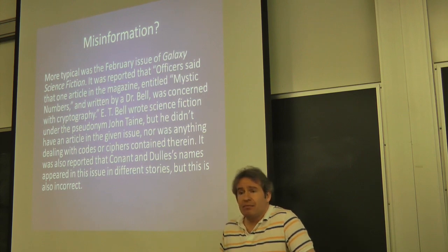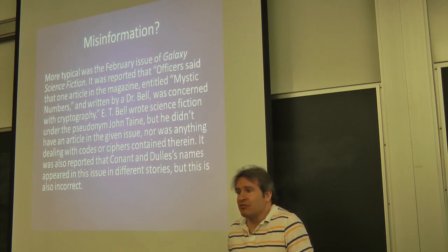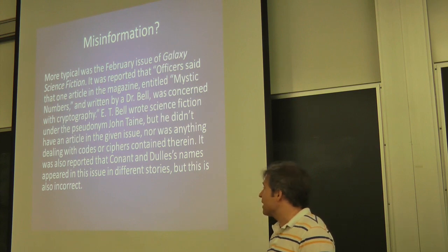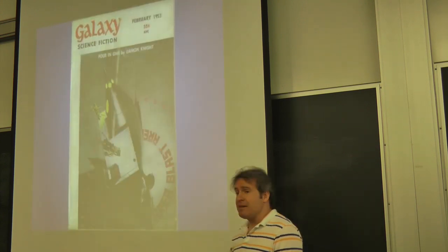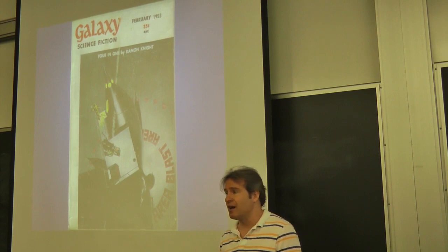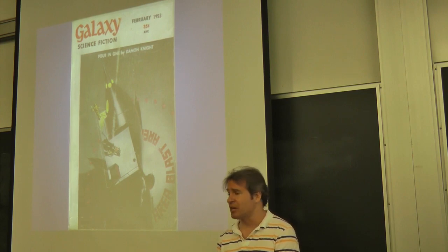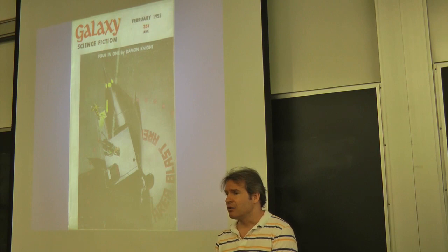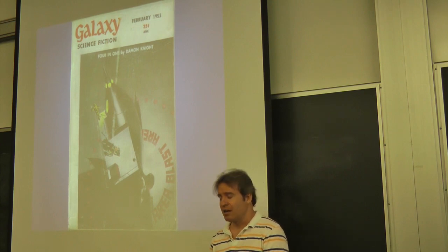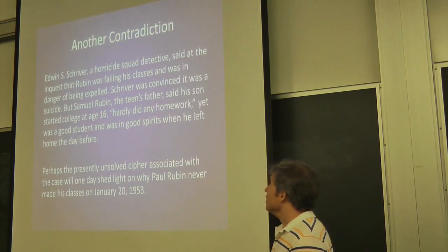So he had science fiction stories in these magazines, right? But not in this issue. So I ordered this magazine. I found it on ABE Books, a used book website. I ordered it. I read the whole thing. Dulles is not in there. Conan is not in there. Bell is not in there. There's maybe an advertisement for one of Bell's science fiction novels, but there's no article by him on cryptography. So why are these claims being made? Is it intentional misinformation or just a mistake, a misunderstanding? What's going on here?